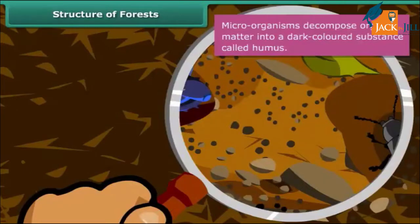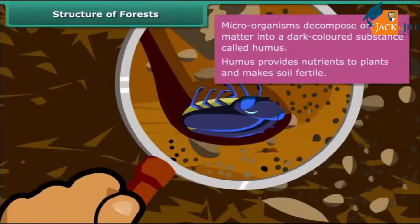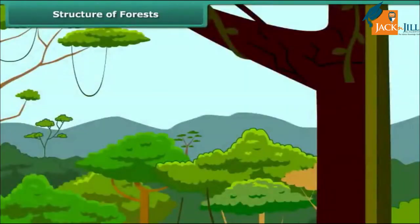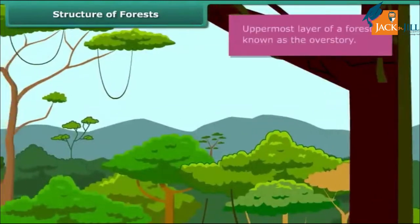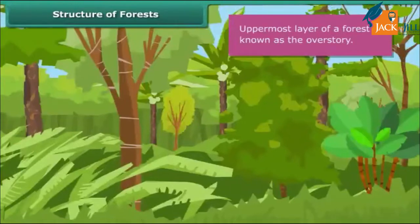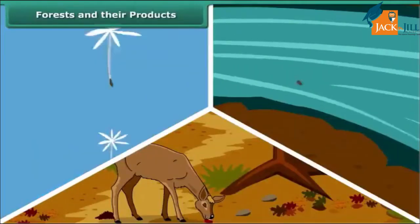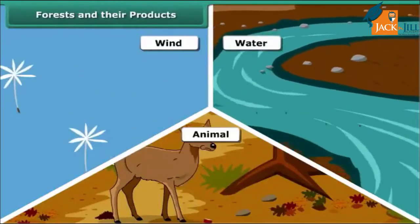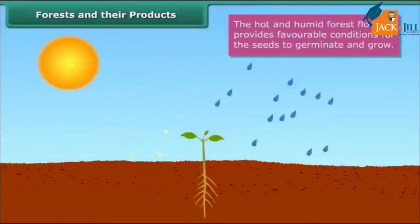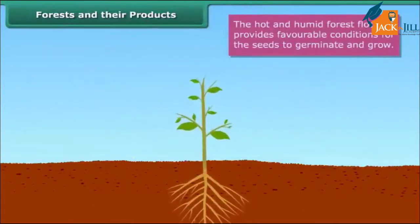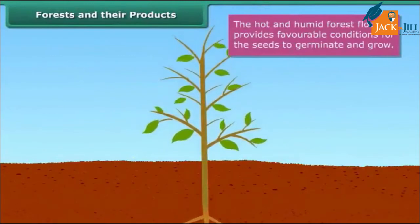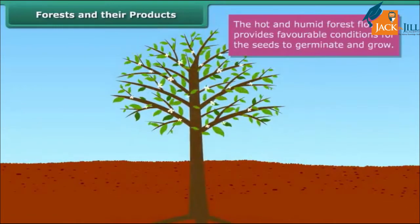Microorganisms decompose organic matter into a dark colored substance called humus. Humus provides nutrients to plants and makes soil fertile. A forest has a layered appearance with trees of different heights. While the uppermost layer is known as the overstory, the lower layers formed by shrubs, herbs and mosses constitute the understory. Seeds produced by trees are dispersed by wind, water and animals. The hot and humid forest floor provides favorable conditions for seeds to germinate. Seedlings emerge from germinated seeds and grow into saplings first and then trees.